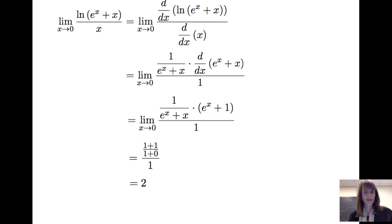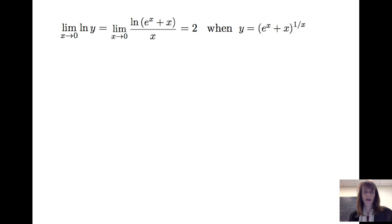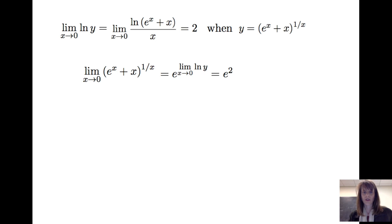But we're not done yet, because that's the limit of the natural log of the expression we want. To undo that, I need to exponentiate. So the limit as x goes to 0 of (e^x + x)^(1/x) is actually e raised to the limit of ln(y) as x goes to 0, giving us e squared.